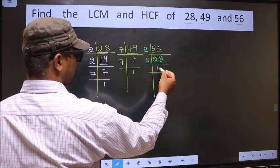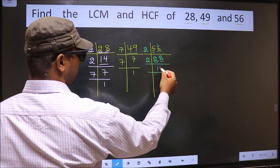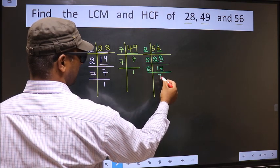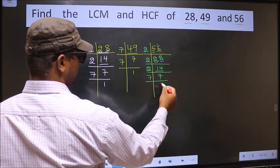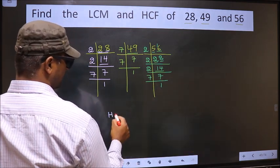First number 2, when do we get 2 in 2 table? 2 times 1 is 2. The other number 8, when do we get 8 in 2 table? 2 times 4 is 8. Now here we have 14, 14 is 2 times 7 is 14. Now we have 7, 7 is the prime number, so 7 times 1 is 7.